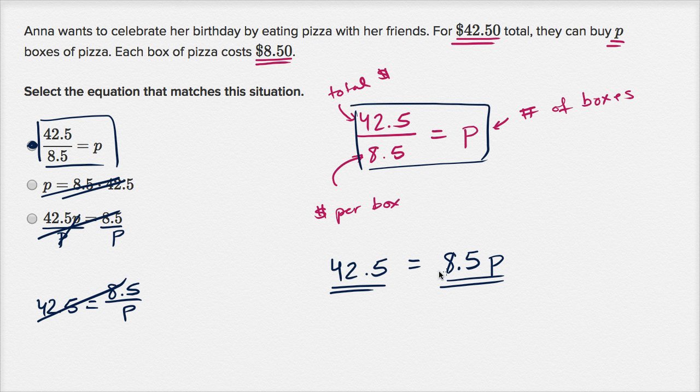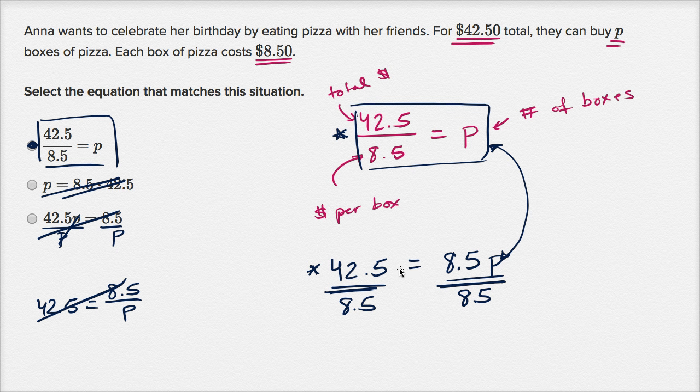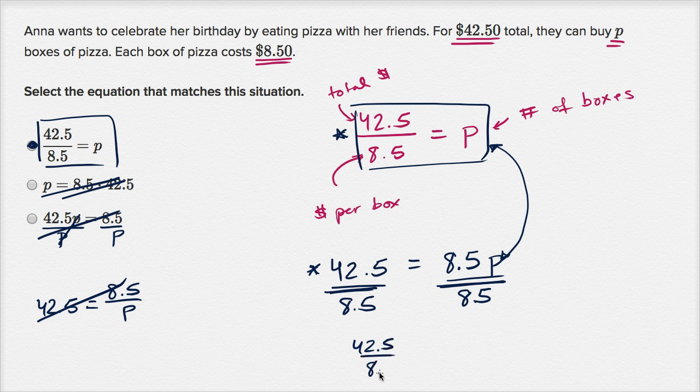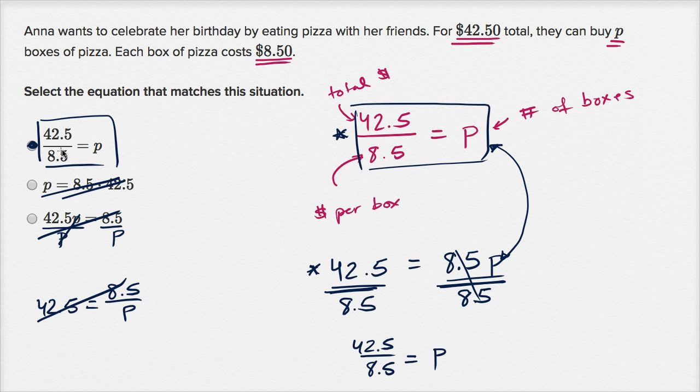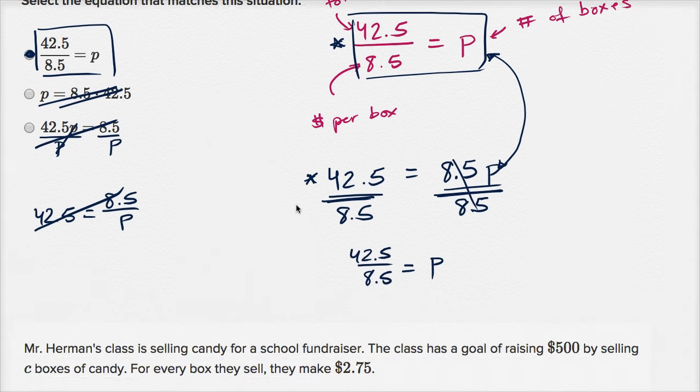And one thing to realize, no matter what you come up with, if you came up with this first or if you came up with this first, you can go between these two with some algebraic manipulations. So for example, to go from this blue one to what I wrote in red up here, you just divide both sides by 8.5. So you divide by 8.5 on the left, you divide by 8.5 on the right. Obviously to keep the equal sign, you have to do the same thing to the left and right. But now you would have 42.5 over 8.5 is equal to p, which is exactly what we have over there. Let's do one more of these.